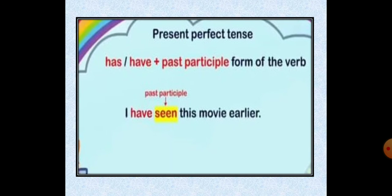Present perfect tense ka example: has/have plus past participle form of the verb. 'I' ke saath basically 'have' rakhenge because it's first person. For example: 'I have seen this movie earlier.' See — show and seen — past participle. So 'I have seen this movie earlier' is an example of present perfect tense.